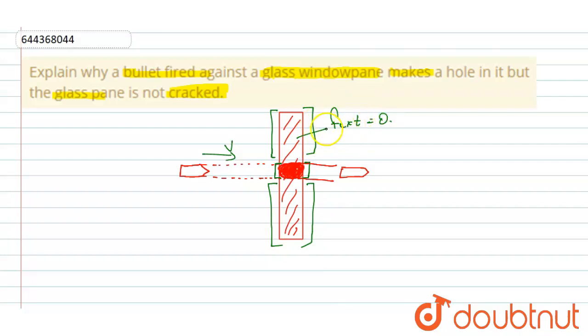So due to the inertia of rest, these particles would like to stay at rest. And here also the net external force is zero. So the external forces applied by the bullet will be experienced by only that part of the glass window.